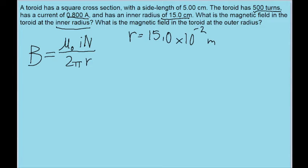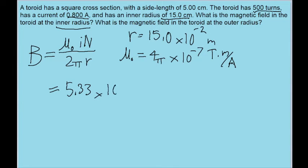So if we plug all these into our calculator for this formula, bearing in mind that the magnetic constant is equal to 4π times 10 to the negative 7 tesla meters per ampere, we find a magnetic field of 5.33 times 10 to the power of negative 4 teslas. So that's the magnetic field for the point at the inner radius of the torus.